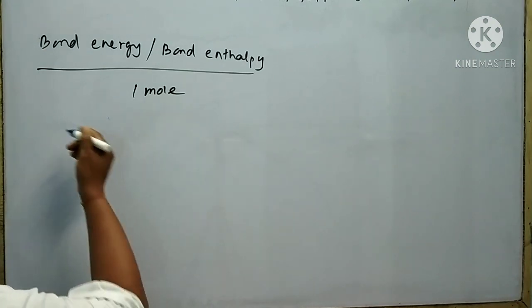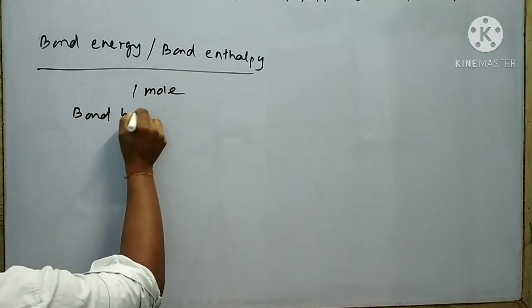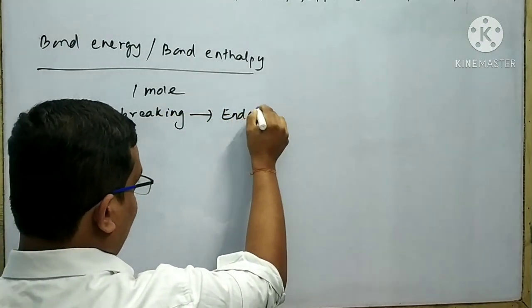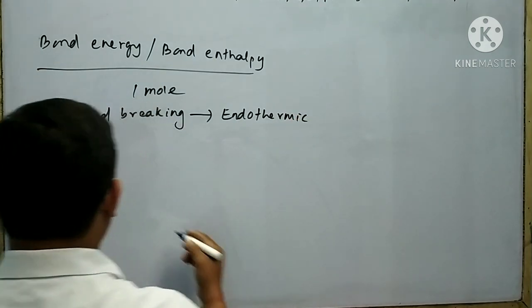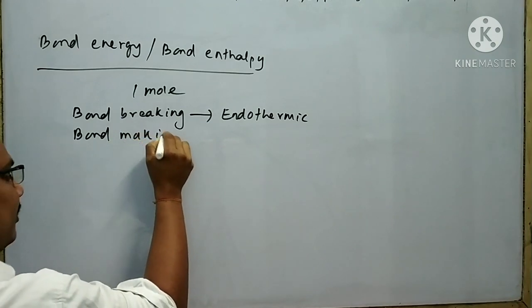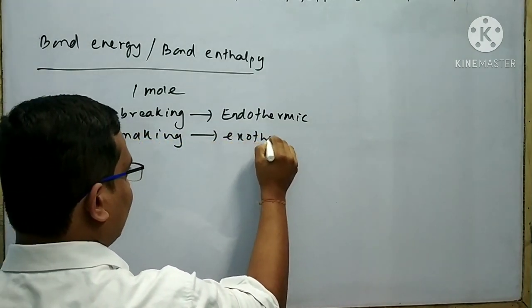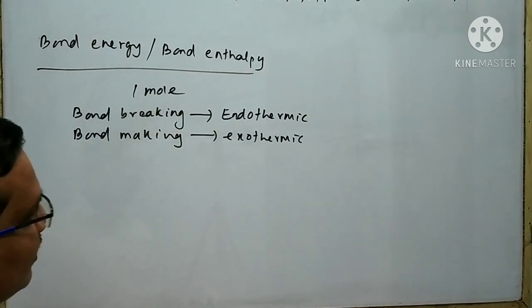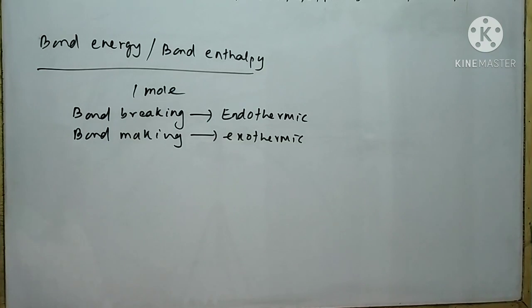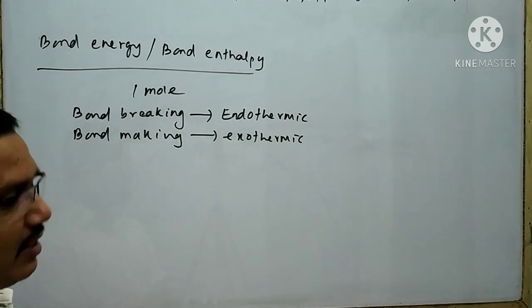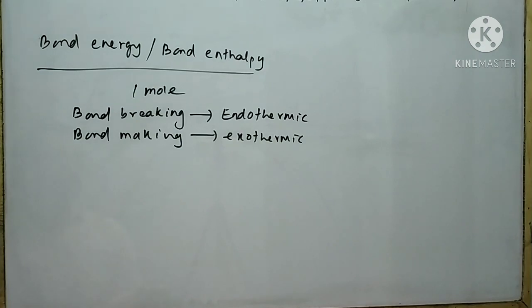Bond breaking is an endothermic reaction, and bond making is an exothermic reaction. Endothermic reaction means the reaction in which heat energy is absorbed. On the other hand, exothermic reaction means the reaction in which energy is released.